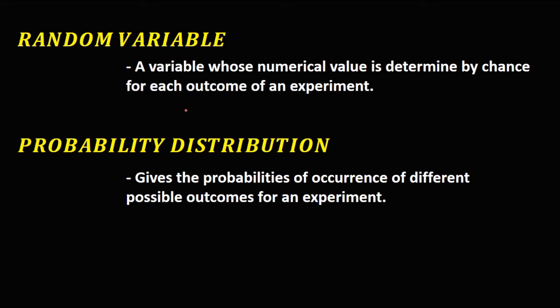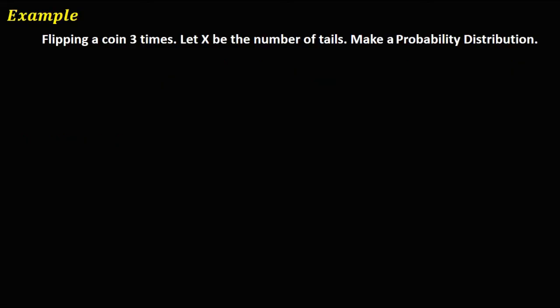To understand more on random variables and probability distributions, we have this example: flipping a coin three times. Let X — our random variable — be the number of tails. Then make a probability distribution.